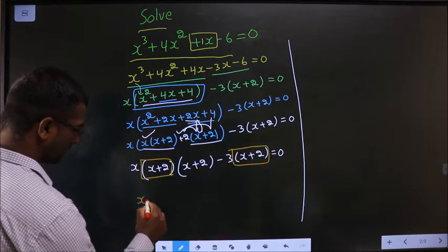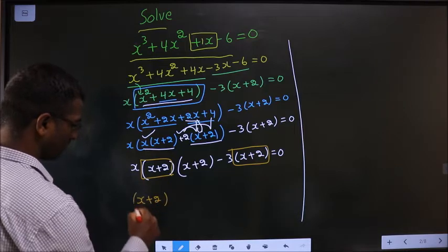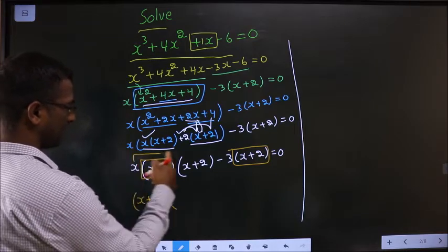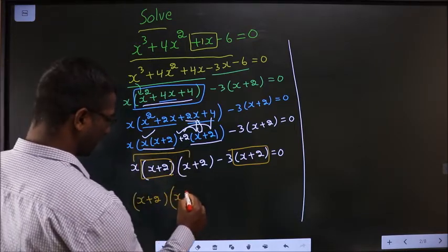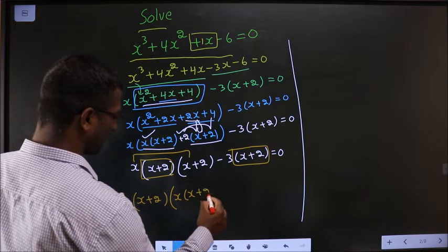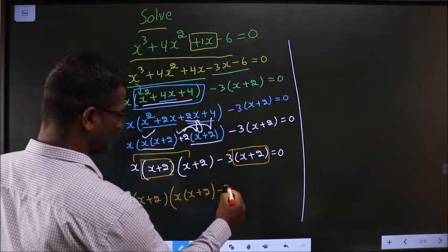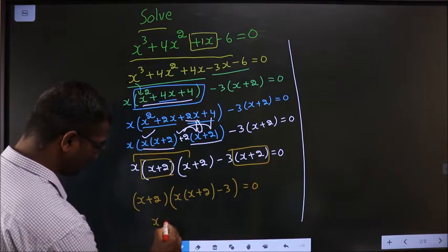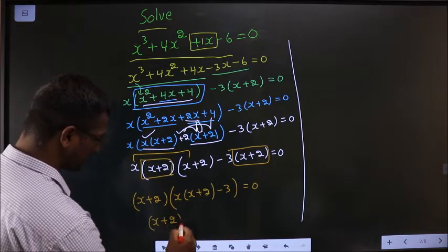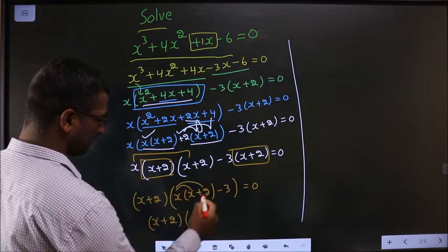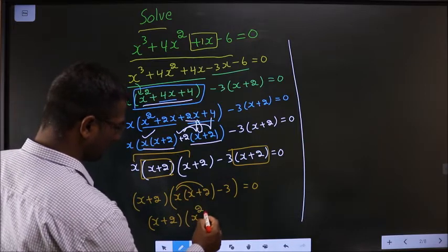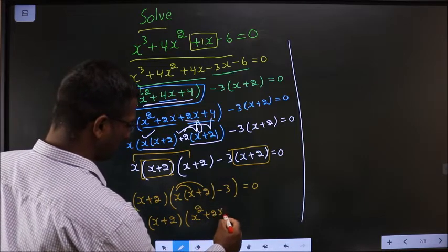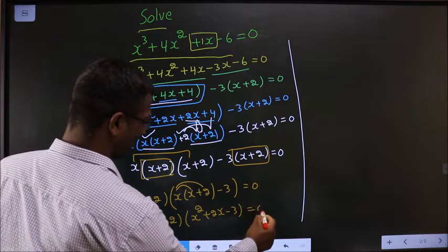Now you should take x plus 2 common. So if I take x plus 2, what do I get? Here I am left with these two: x times x plus 2. Here it is minus 3 equal to 0. Next, x plus 2 times multiply. So what do I get?